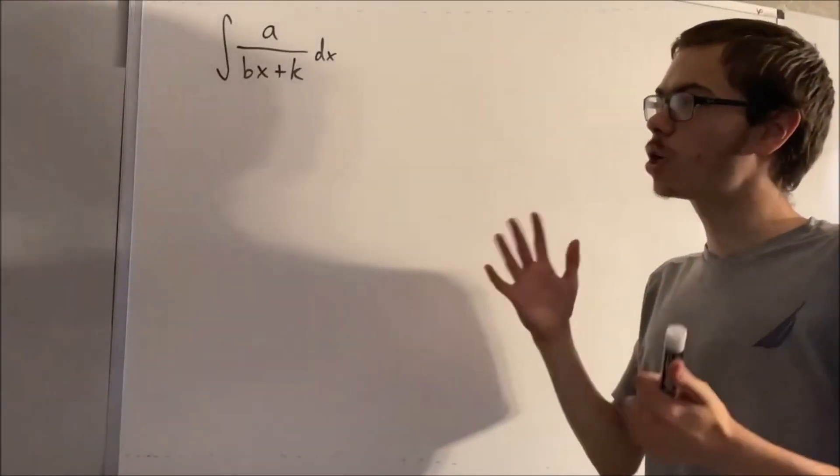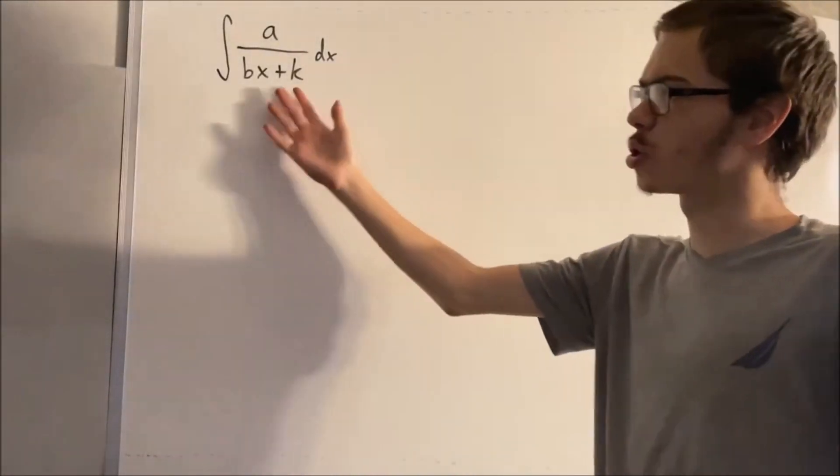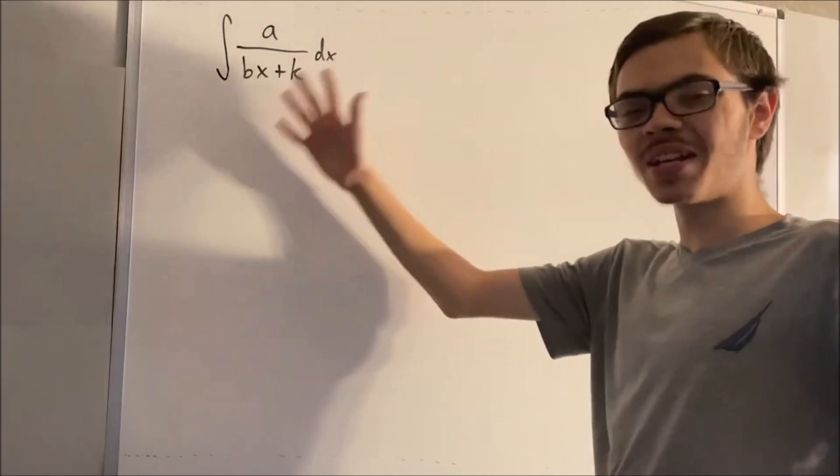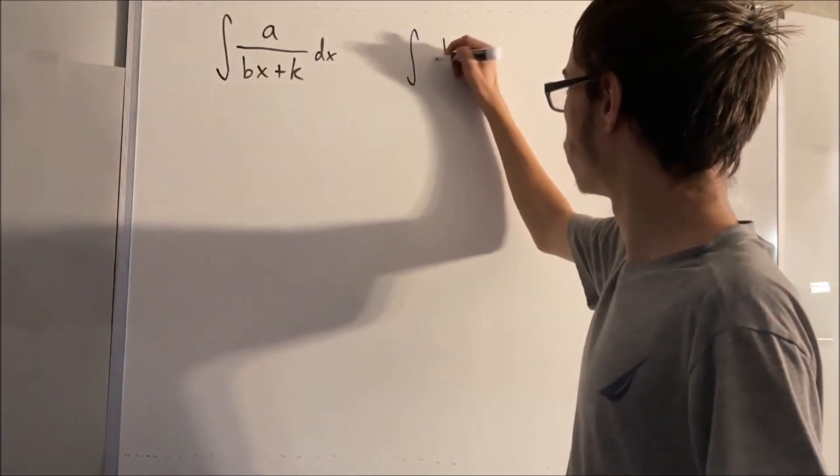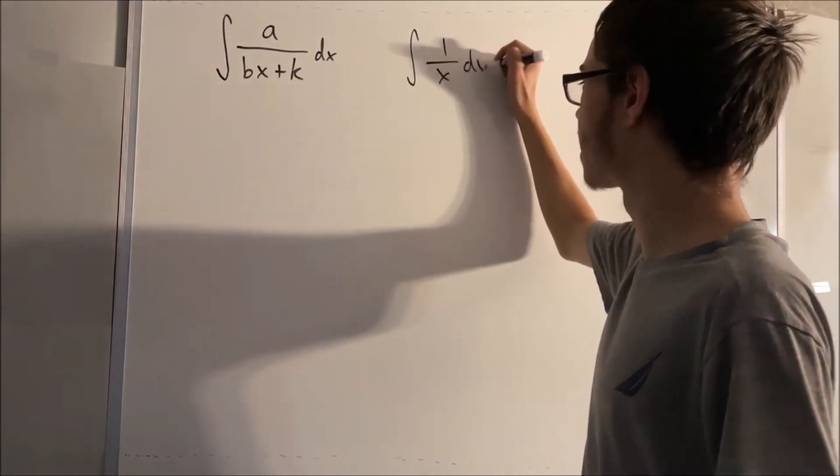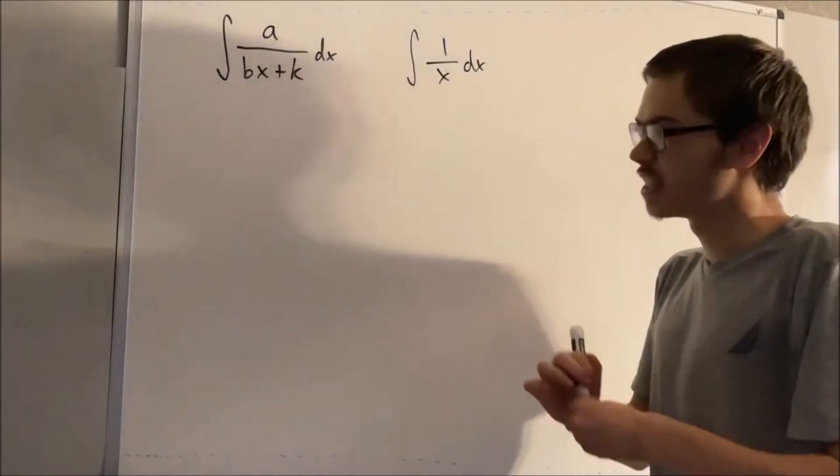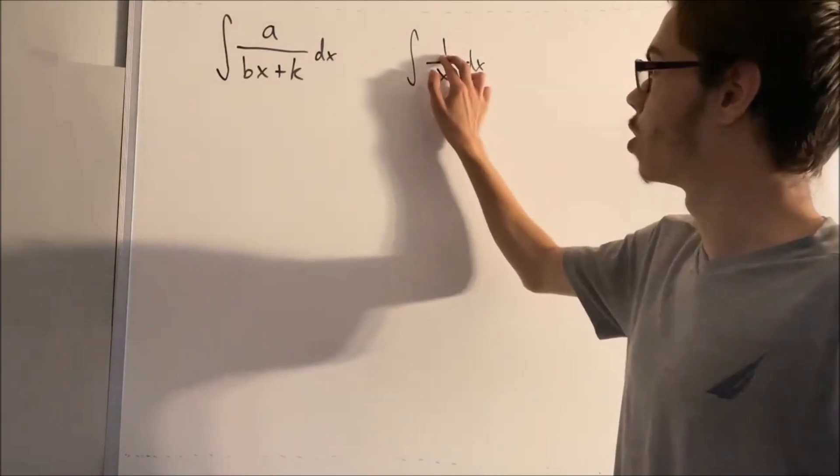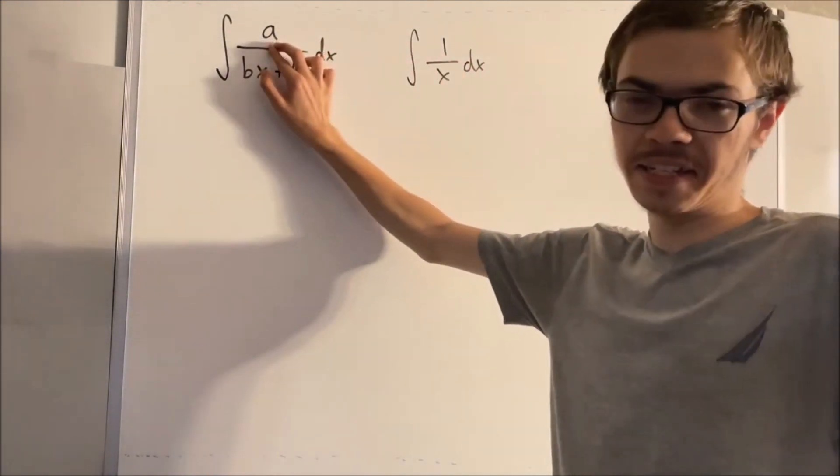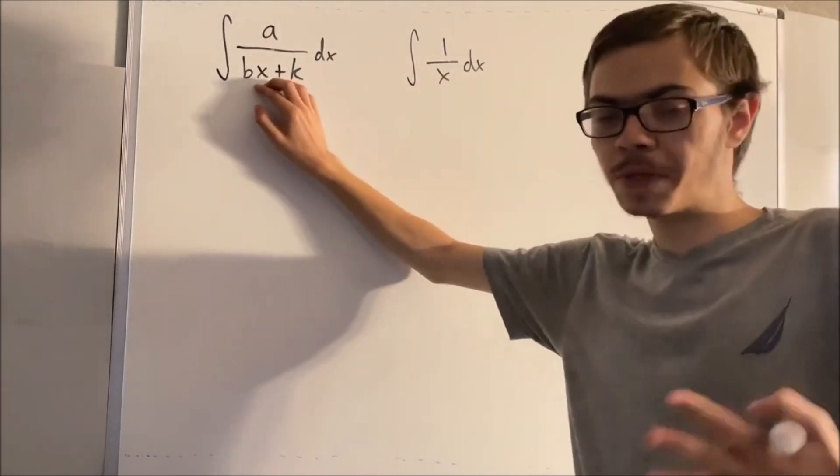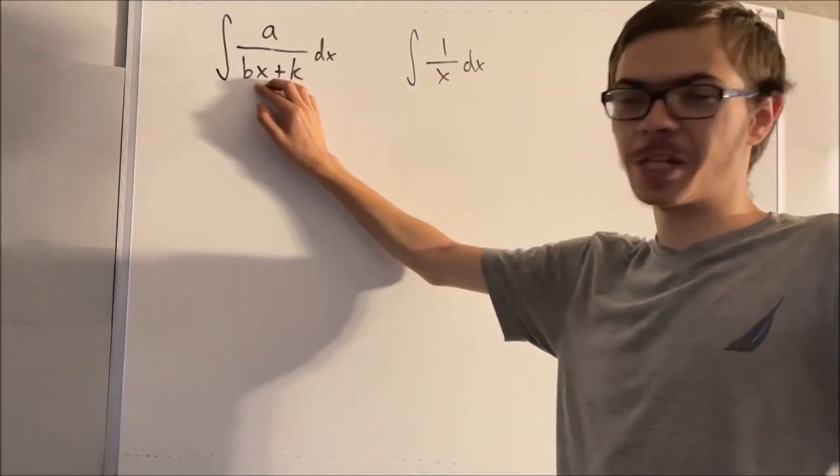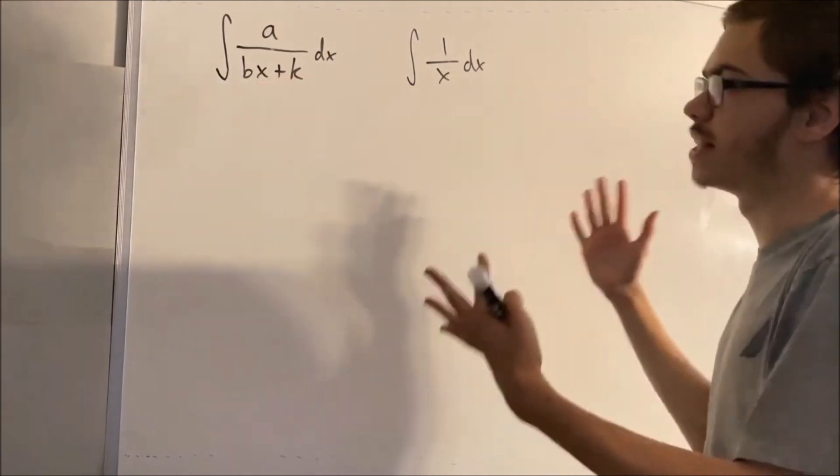In this video, we're going to talk about this integral right here. Now this integral is really similar to the integral of 1 over x dx. The only difference is that in the numerator, it's just any constant. And in the denominator, instead of this being an x, it's just replaced with any linear equation. That's all it is.